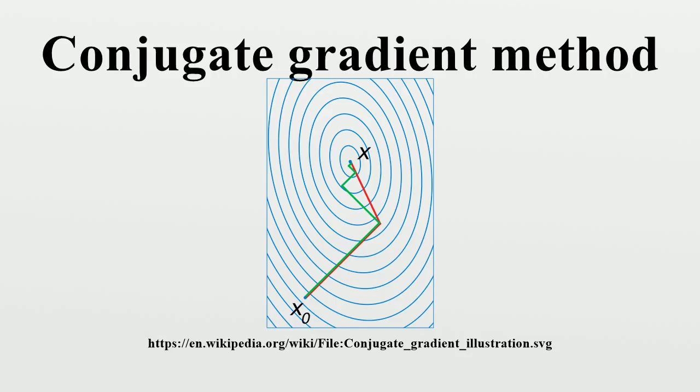Starting with x_0, we search for the solution and in each iteration we need a metric to tell us whether we are closer to the solution x*. This metric comes from the fact that the solution x* is also the unique minimizer of the following quadratic function.